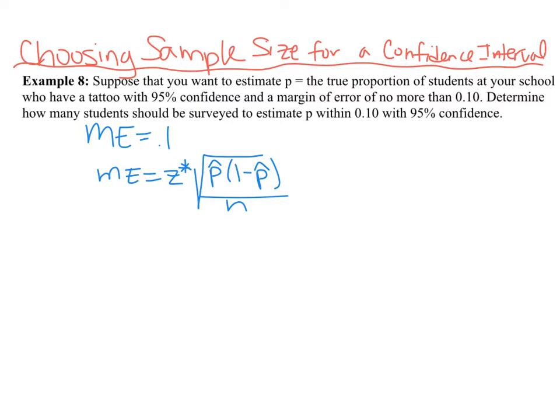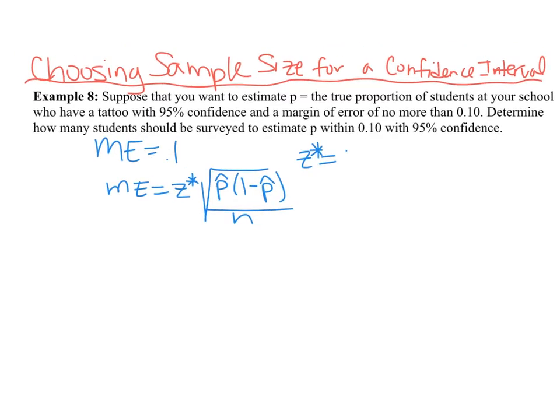So this is our formula that we are going to use. We know the margin of error. Actually, since we are working with 95% confidence, we also know that our z star is going to be 1.96. So the n is what we are looking for, the sample size.